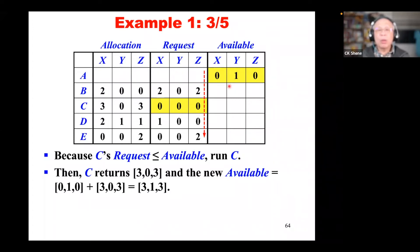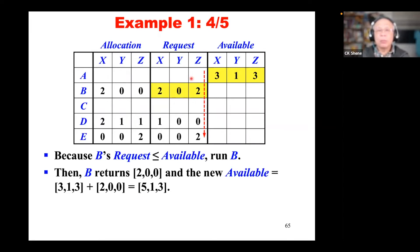If every finish entry is true, the system is safe — no deadlock. If finish[i] is false for some i, then the corresponding process Pi is deadlocked. Basically, all processes whose finish equals false could not get the resources they need, and the deadlock happens.